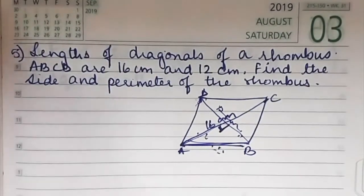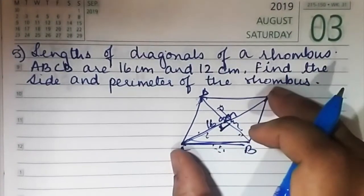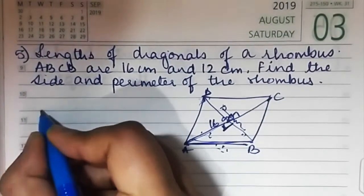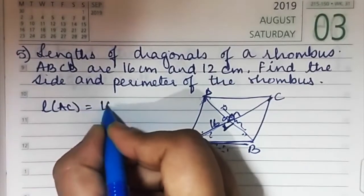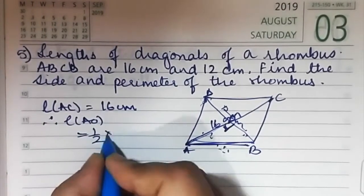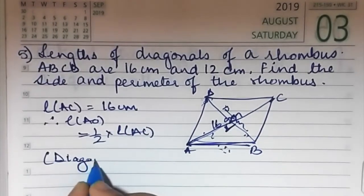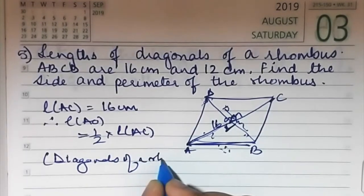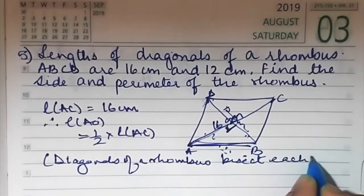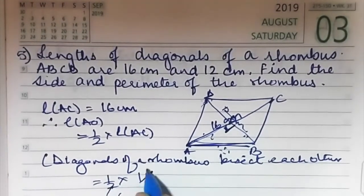Let's label the center point as O. AC is 16. AO will be 8. AC is equal to 16 centimeters, therefore length AO is equal to half of AC — because diagonals of a rhombus bisect each other — so AO is equal to half of 16, which is 8 centimeters.